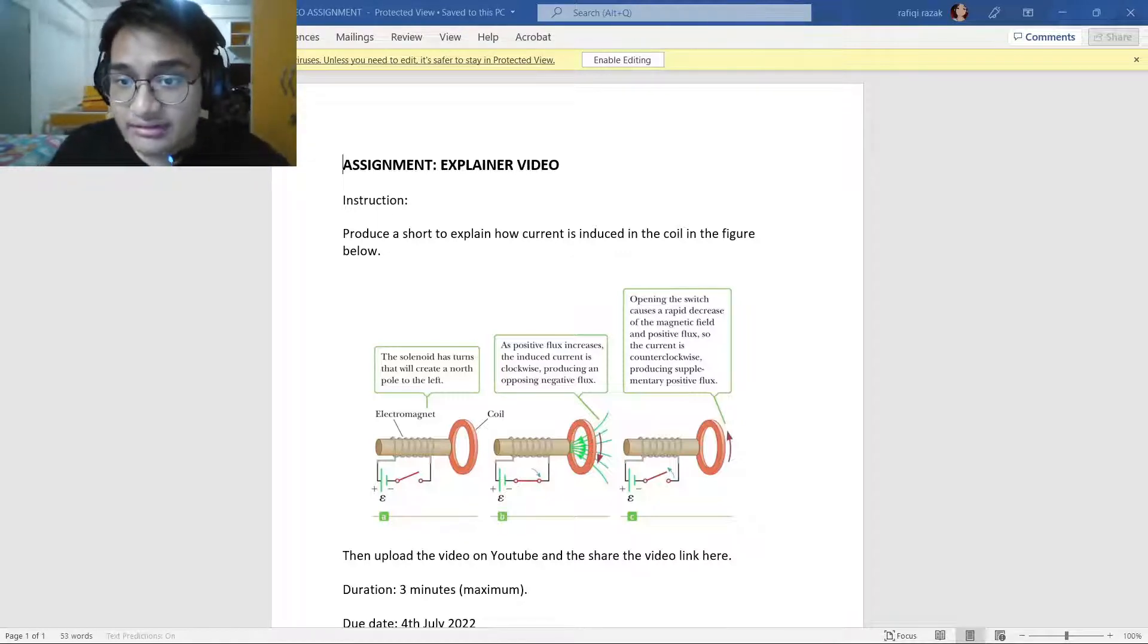Choose left as the normal direction, and when the switch is closed, the current in the solenoid begins to increase. The magnetic flux through the coil is positive and increasing with time.